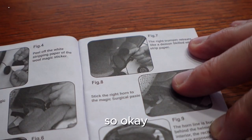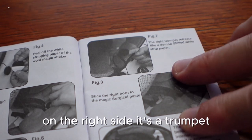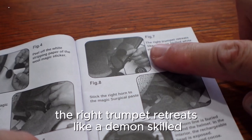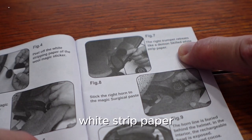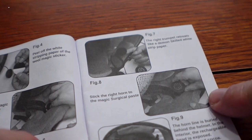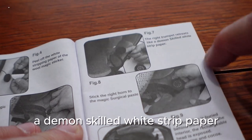The right trumpet retreats like a demon skilled white strip paper. Let me read that again: a demon skilled white strip paper. Yeah, okay, got it.